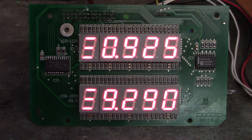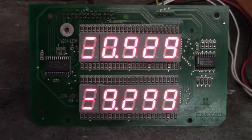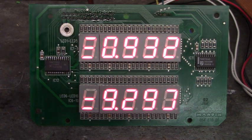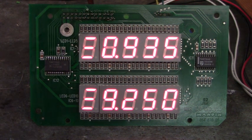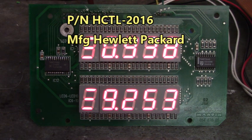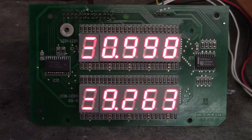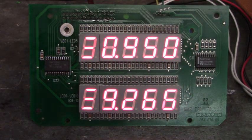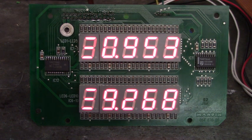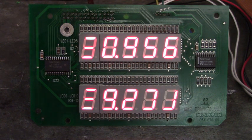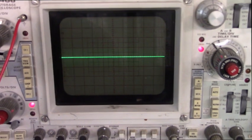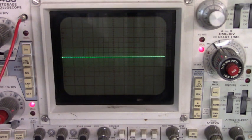First thing I want to look at is the quadrature encoder interface IC, part number HCTL-2016 made by Hewlett-Packard. I'm going to move the camera over in front of the oscilloscope and we'll take a look at what we see on that IC.